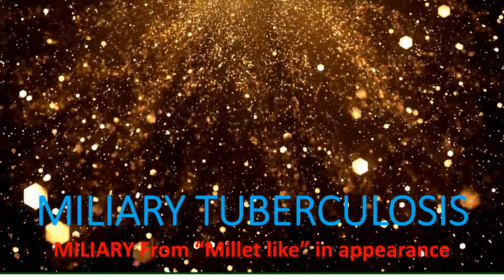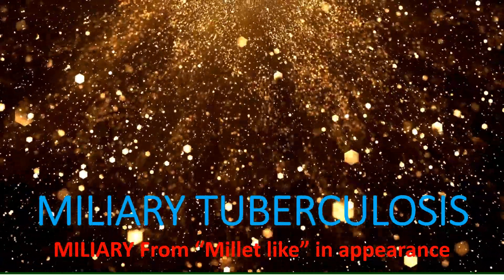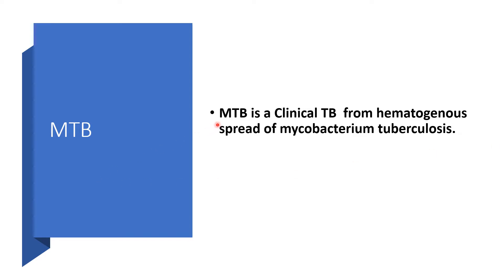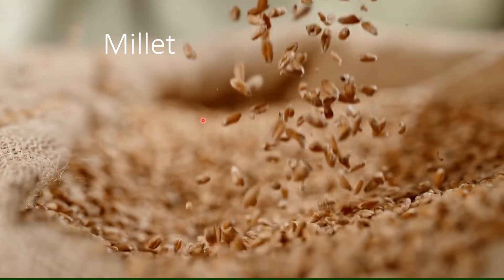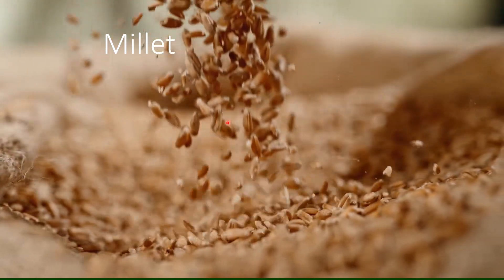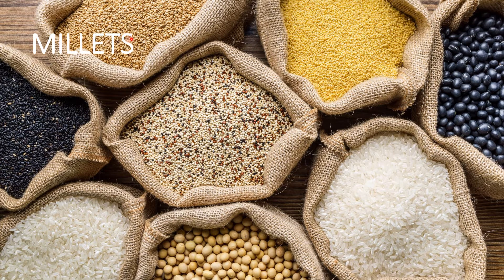Miliary Tuberculosis — 'Miliary' is taking form, miliary-like in appearance. Miliary Tuberculosis is a clinical tuberculosis from hematogenous or lymphatic spread of Mycobacterium tuberculosis. This is millet. In some countries they have up to five different types of millets. Miliary Tuberculosis is coined from millet-like in appearance of the granules.